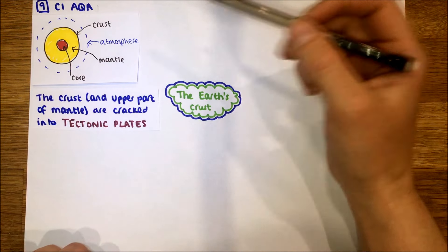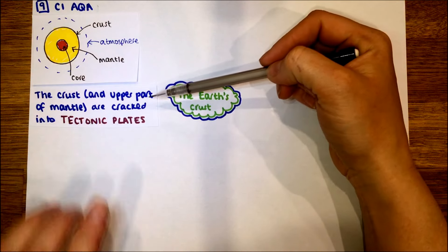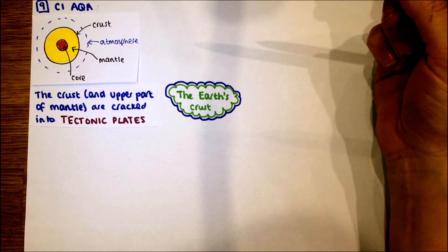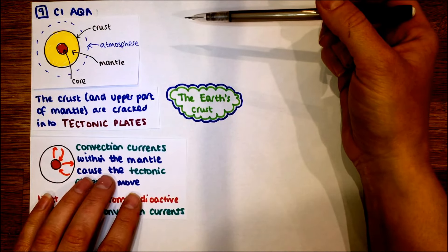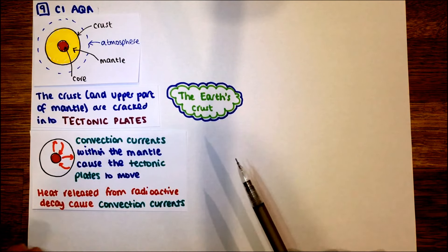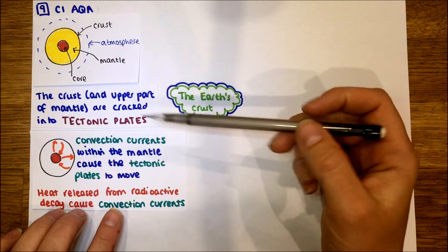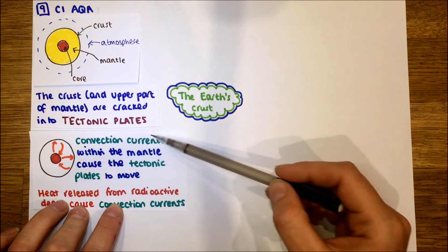The crust and the very upper part of the mantle then is separated into what we call tectonic plates. You've probably heard of these in geography. You need to be aware that we have convection currents. Those convection currents move the tectonic plates. So over time, we know that those plates have moved. The reason being these tectonic plates, these convection currents work is because that core heats that mantle.